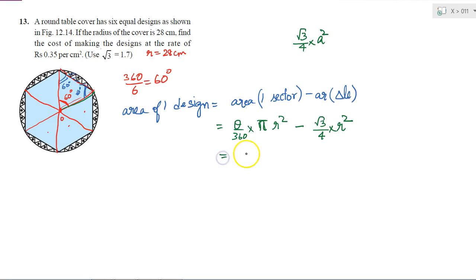So I can also write it as theta by 360 into π, I am taking r² common. Then what will I get? Here I will get theta by 360 into π minus, here I will get √3 by 4. So this is equal to theta by 360 into π minus √3 by 4 into r².